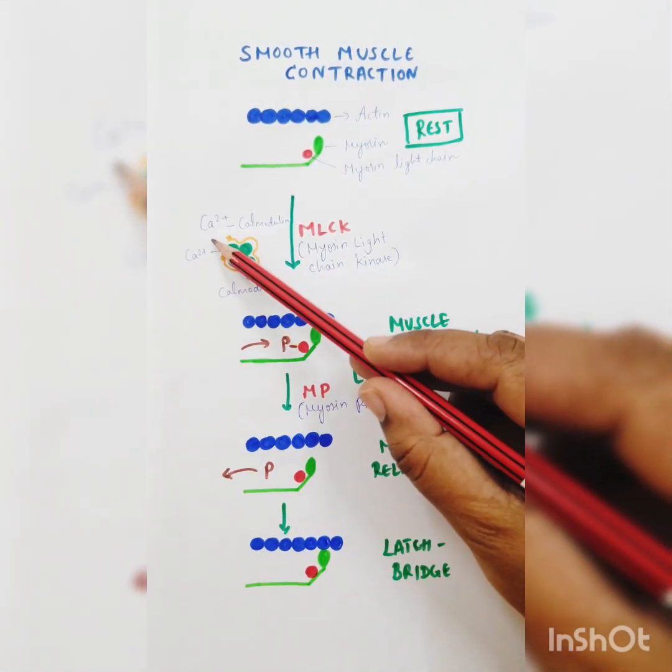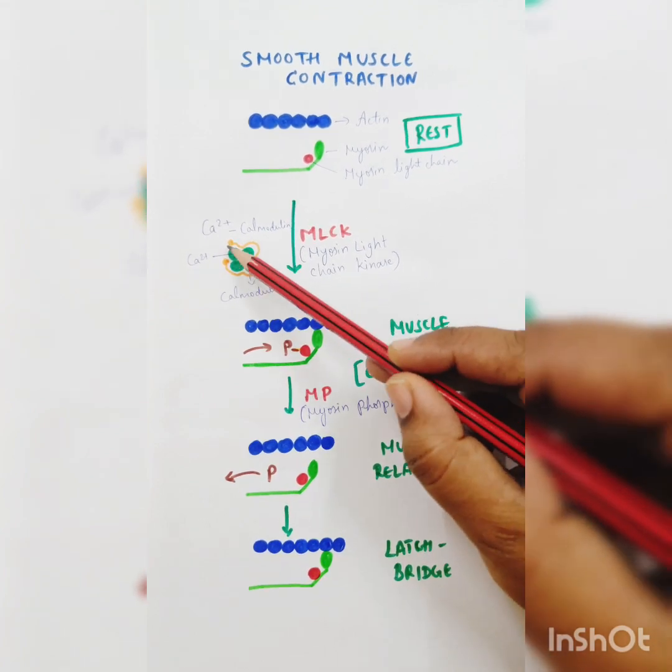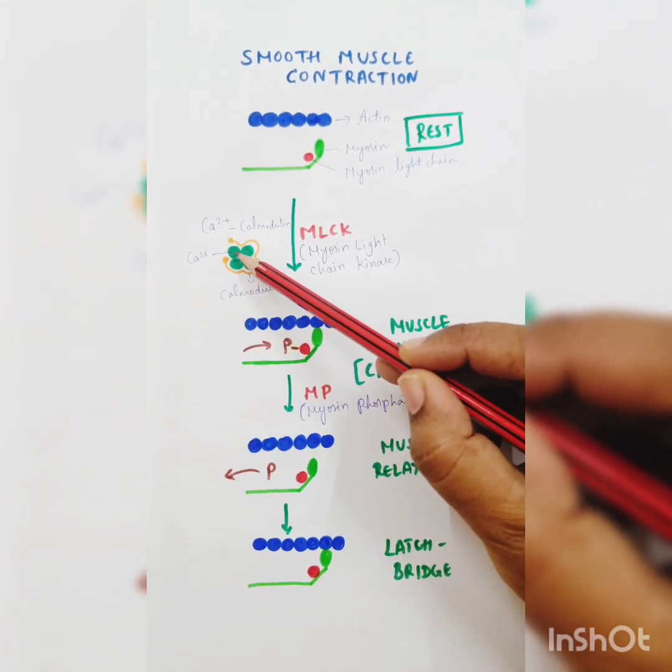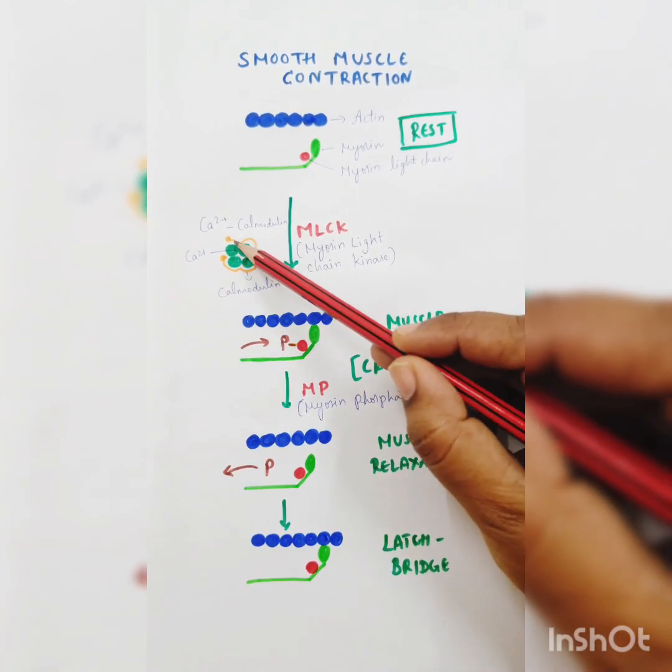When smooth muscle is stimulated, calcium enters from extracellular fluid and combines with calmodulin to form the calcium-calmodulin complex. You can see here there are four calcium ions bound with one calmodulin molecule.